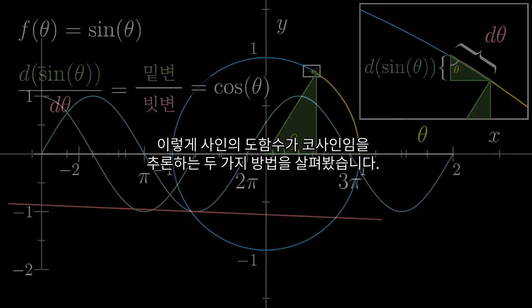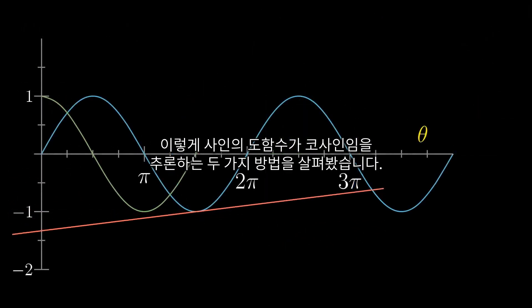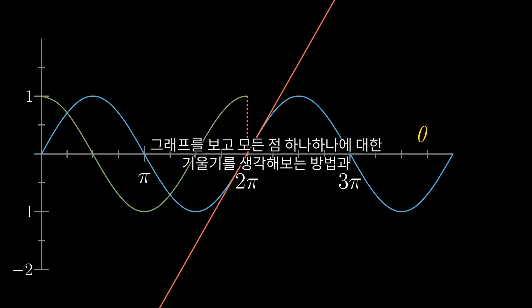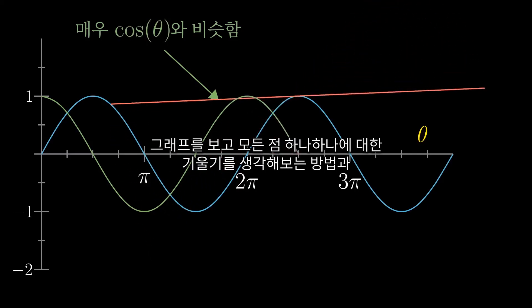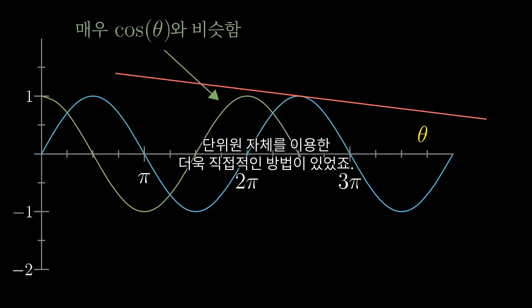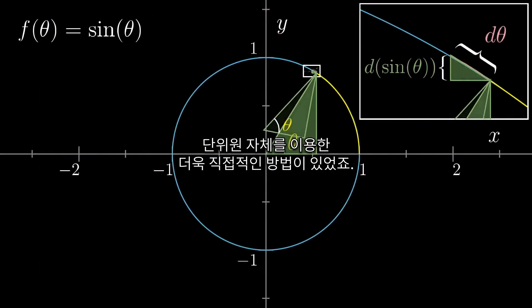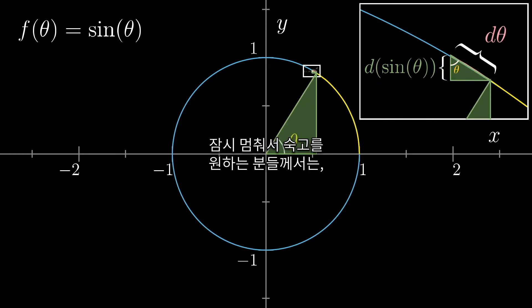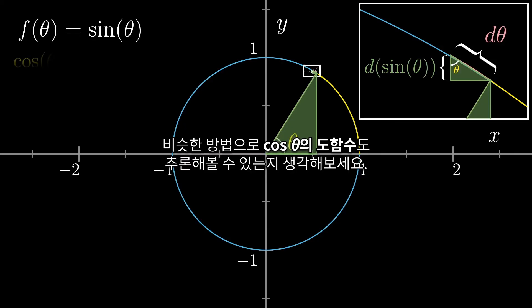So this gives us two different really nice ways of thinking about how the derivative of sine is cosine. One of them is looking at the graph, and getting a loose feel for the shape of things, based on thinking about the slope of the sine graph at every single point. And the other is a more precise line of reasoning, looking at the unit circle itself. For those of you that like to pause and ponder, see if you can try a similar line of reasoning to find what the derivative of the cosine of theta should be.